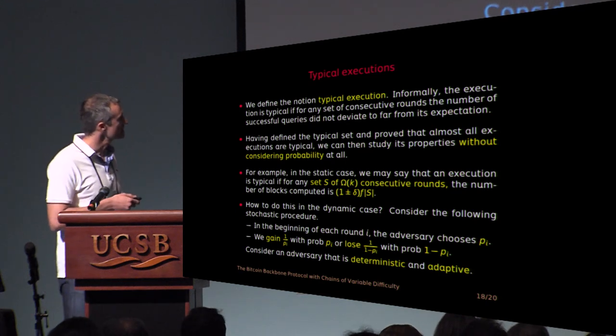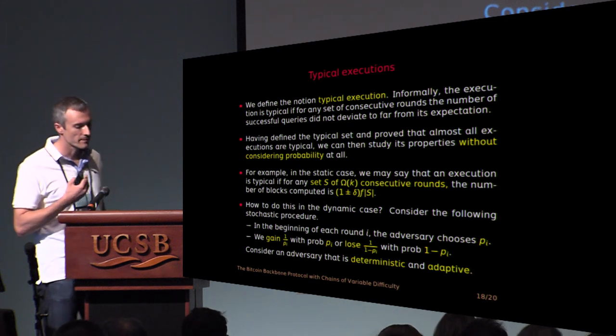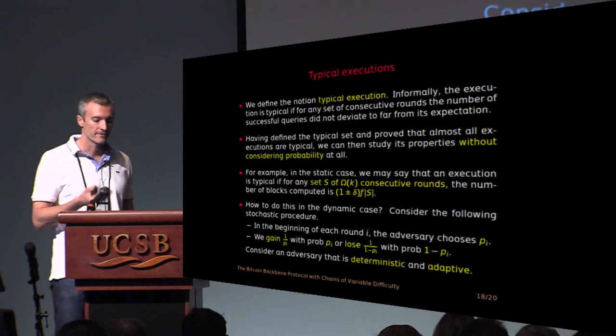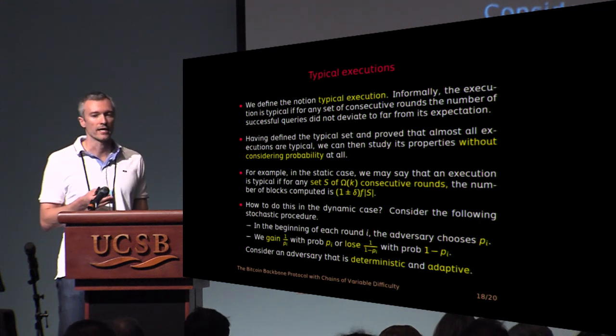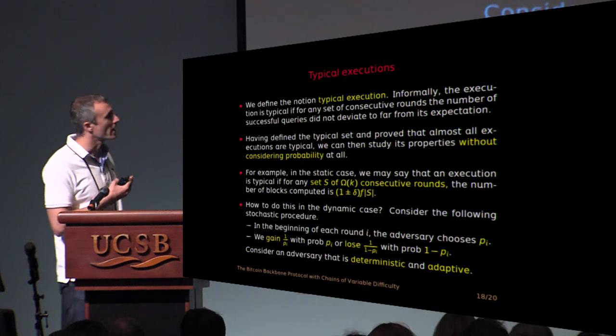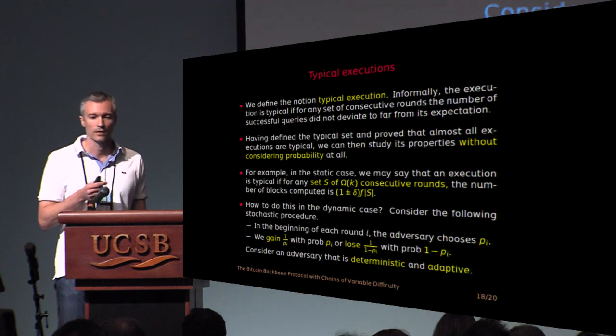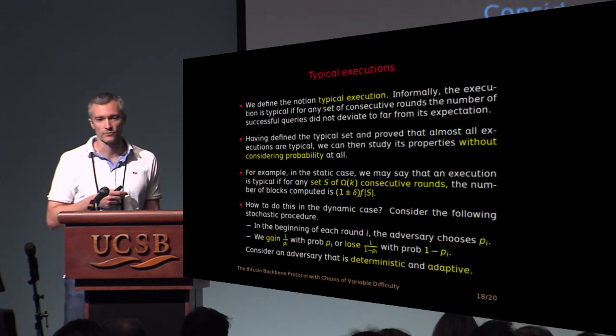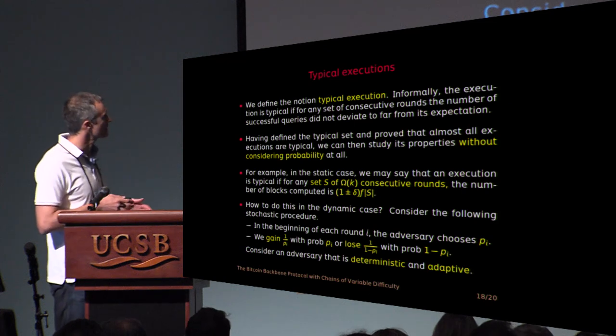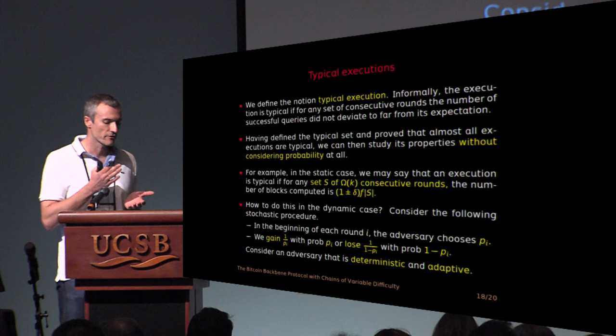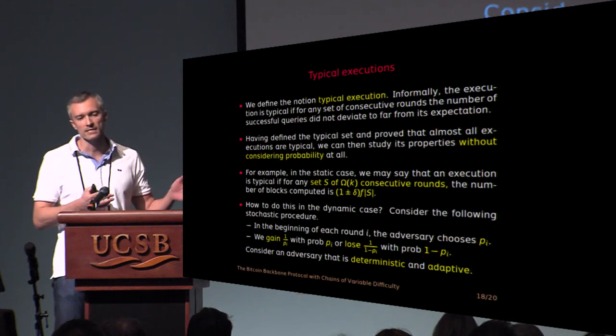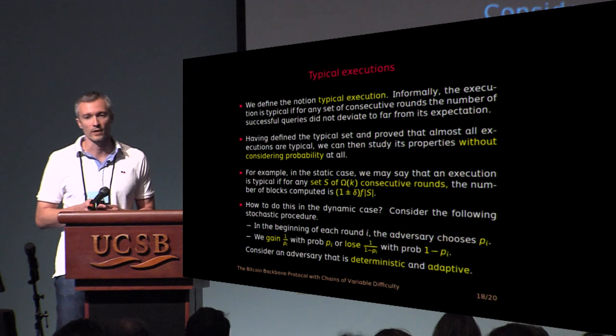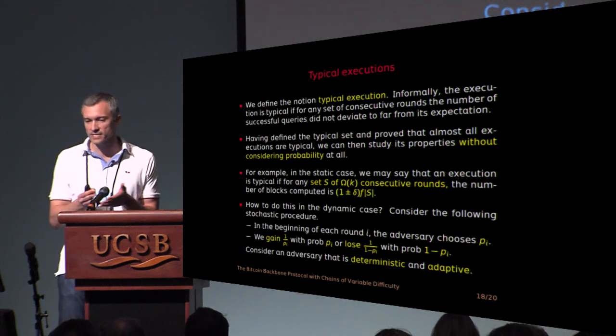But how do you do this in the dynamic case? To appreciate the difficulty let us consider the following game. Suppose you are playing a game with an opponent and at each round the opponent is choosing a bias probability P. And then you flip a coin, you engage in a Bernoulli trial which has success probability P. And if there is a success you gain 1 over P. So this corresponds to the difficulty that you compute when you are successful. Or if you lose with probability 1 minus P, you lose 1 over 1 minus P. So this defines a martingale. But note that the adversary is deterministic. You can think of it as deterministic but it's also adaptive. So at every round the adversary can look at the past and decide what's the new probability in your Bernoulli trial. So how do you define a typical set for this one?